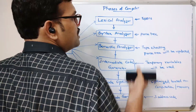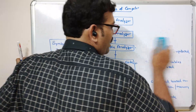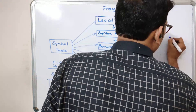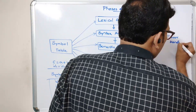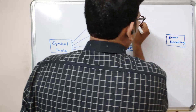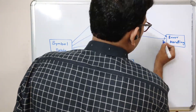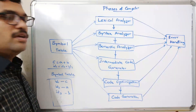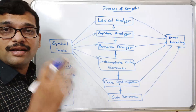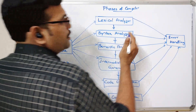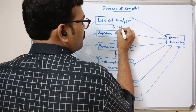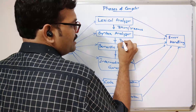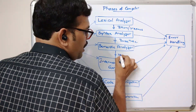There is one more component — the error handler. If there are any errors in any stage, they will be handled by the error handling mechanism. Lexical analyzer outputs tokens, also called lexemes. The syntax analyzer produces a parse tree, the semantic analyzer produces an updated parse tree, which we can also call a syntax tree.